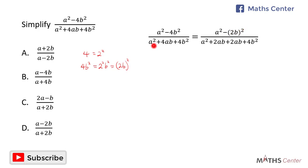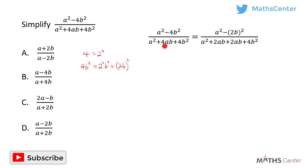Now let's consider the expression on the denominator: a squared plus 4ab plus 4b squared. This is a quadratic expression. To factorize it, we multiply the coefficient of a squared by the coefficient of b squared. The coefficient of a squared is 1 and the coefficient of b squared is 4, so 1 times 4 gives us 4. We are looking for two numbers that multiply to give 4 and add to give 4.